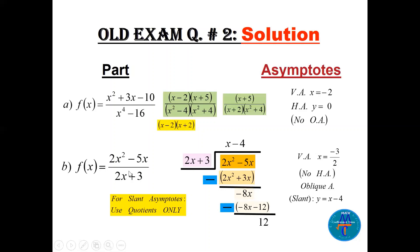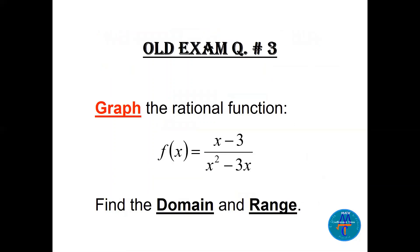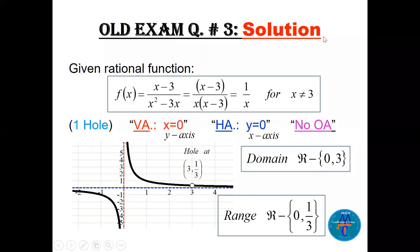Question 3: graph the function (x - 3) / (x² - 3x) and find the domain and range. The advice: always try to factor numerator and denominator and check for cancellations. Factoring the denominator gives x(x - 3), so (x - 3) cancels — that's a missing point. The simplified function is 1/x, so the vertical asymptote is x = 0 and the horizontal asymptote is y = 0. No oblique asymptote.